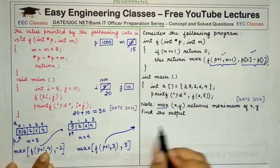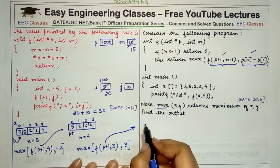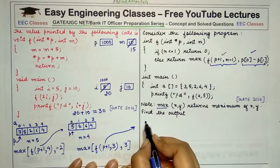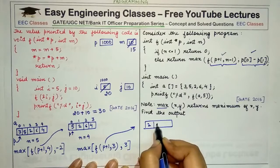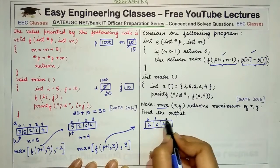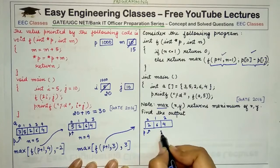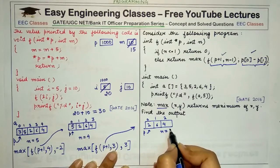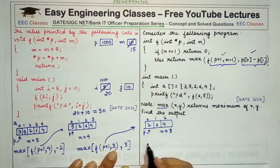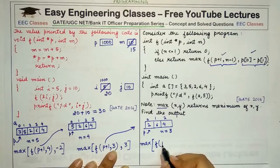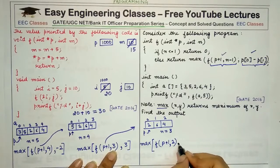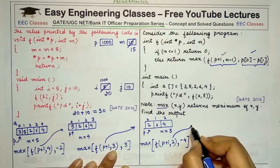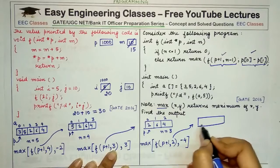This call makes another call to function f, passing the array [2, 6, 4]. The value of n is 3, and since n is not less than or equal to 1, another call is made to max with an inner call of f(p+1, n-1=2). Here p[0] is 2 and p[1] is 6, so 2 minus 6 equals minus 4.